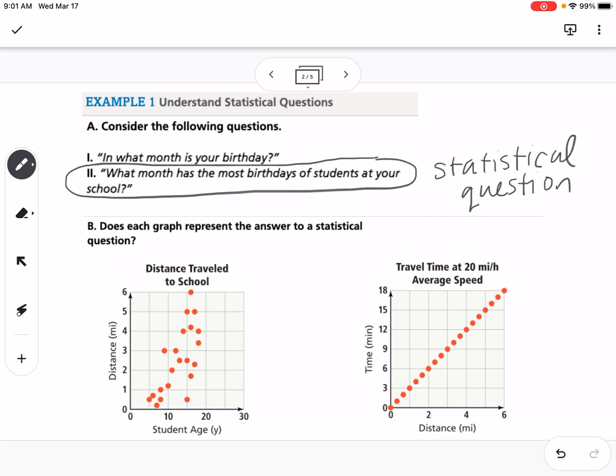The second one, does each graph represent the answer to a statistical question? If we look at our two graphs, the one on the left is distance traveled to school, comparing student age with the distance they travel in miles. This would be a collection of information, so we would have to survey students to find out their age and how far they traveled to school. So this would be a statistical question, an answer to a statistical question.